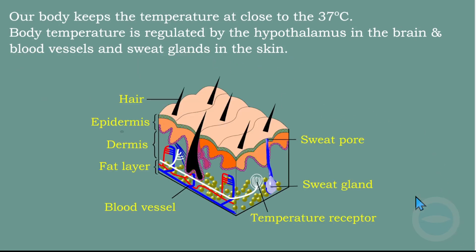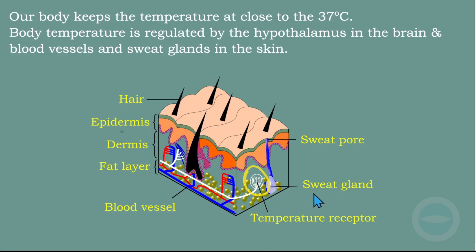Let me show the structure of the skin. You must be able to label this structure, as these are the parts involved in thermoregulation. The skin contains three layers: epidermis, dermis, and the fat layer. We have blood vessels where blood flows through the skin, temperature receptors (thermoceptors) that sense temperature with centers for coldness and hotness, sweat glands that secrete sweat, and sweat pores at the surface of the skin where sweat exits.